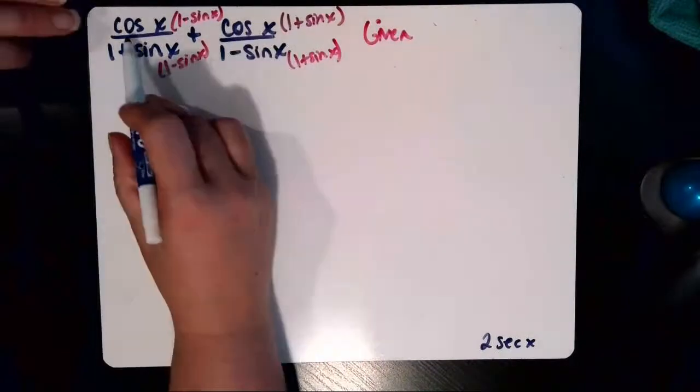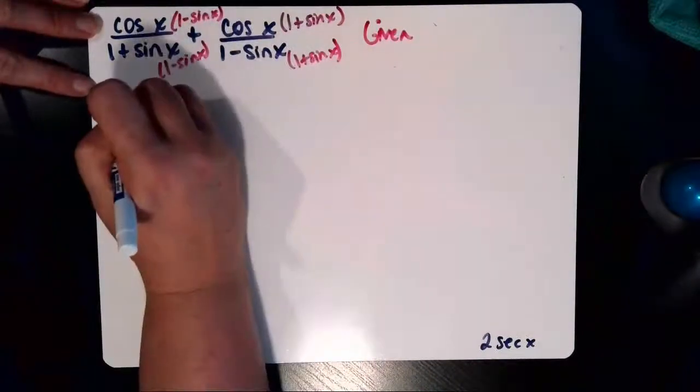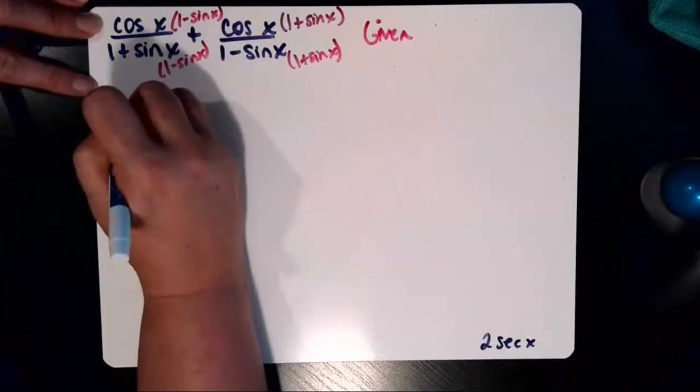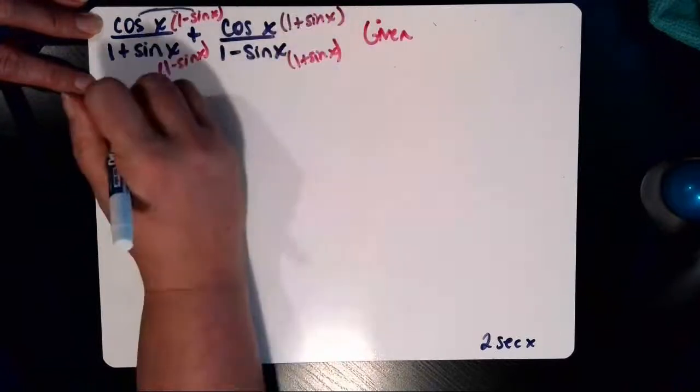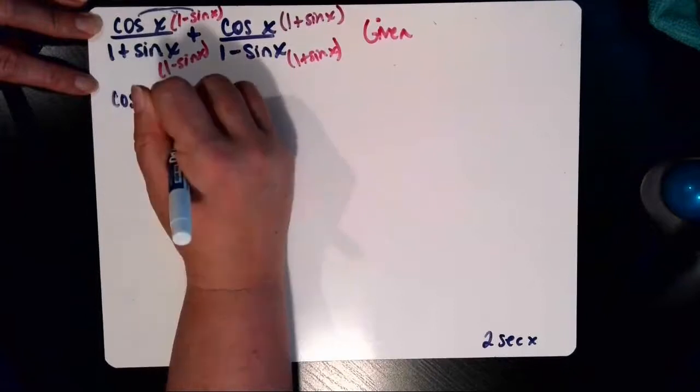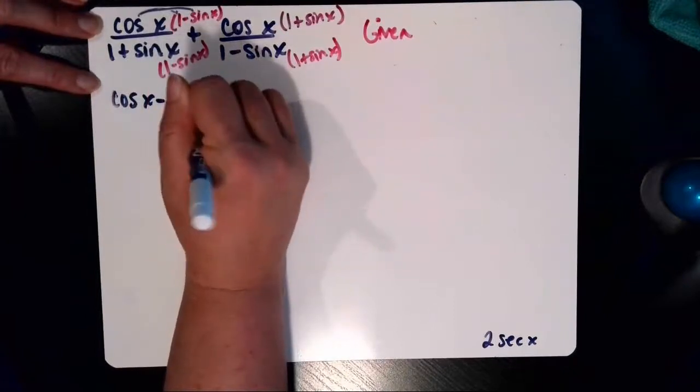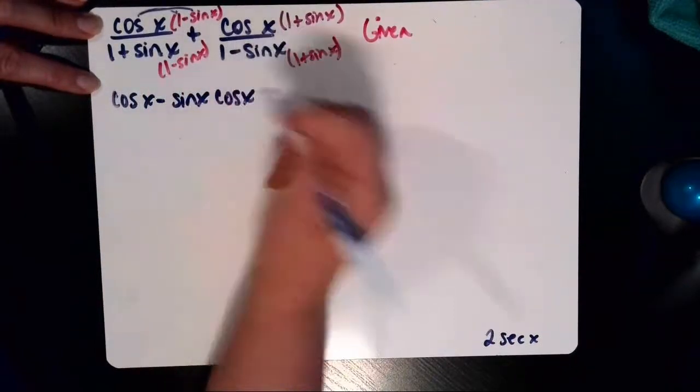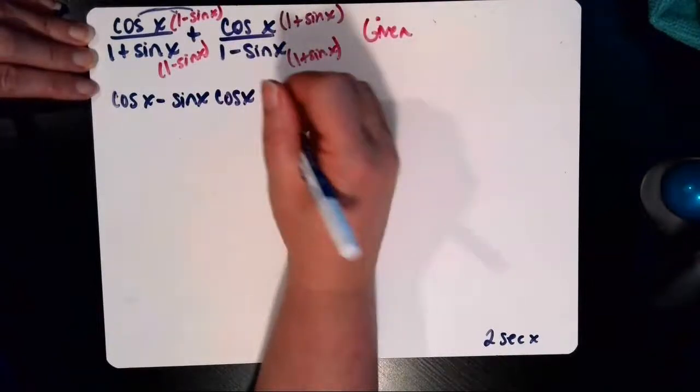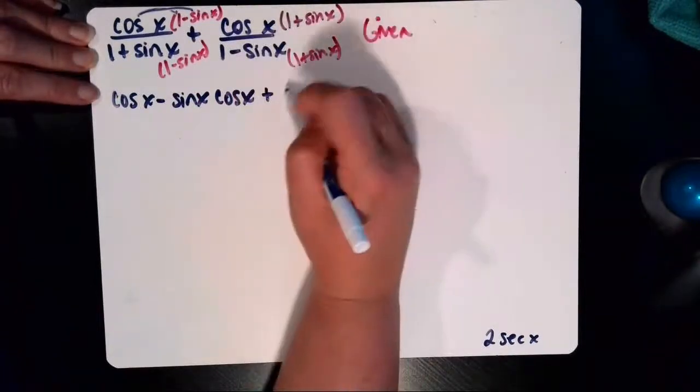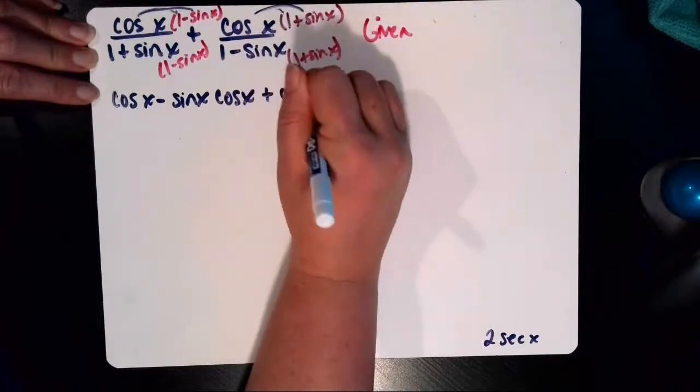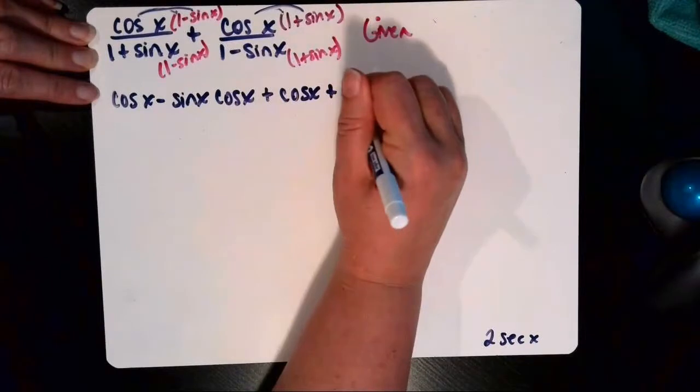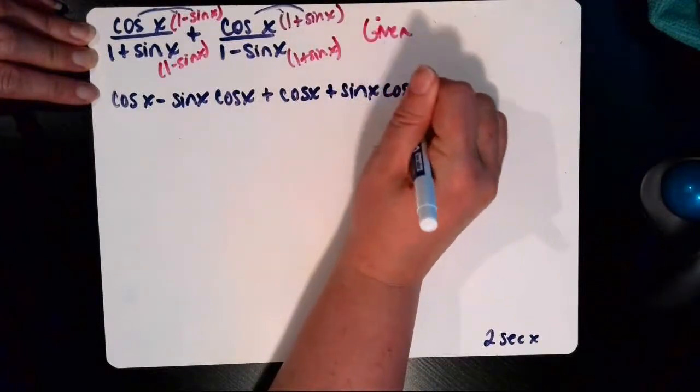So in my first section, I'm going to have my first fraction, I'm going to have cosine of x when I distribute minus the sine of x cosine of x. Then in my second side here, I'll have plus, and then I'll distribute, and that'll be a cosine of x plus sine of x cosine of x.